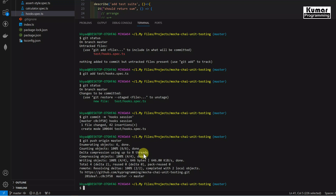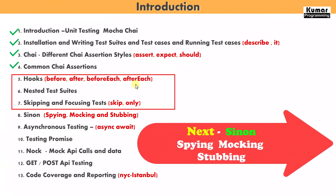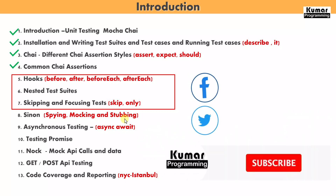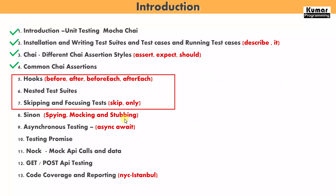In this video we learned about hooks, types of hooks, and how to use them. We also covered nested test suites and the skip and only keywords, which are used to skip or execute specific test cases. In the next section we'll cover the Sinon library - spying, mocking, and stubbing. Please subscribe to the channel and press the bell icon for notifications. See you in the next video!